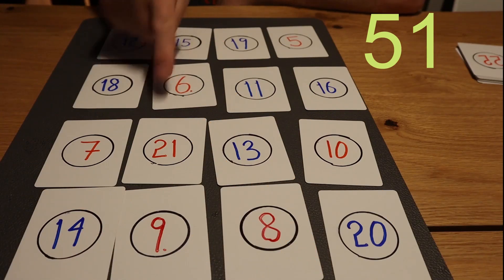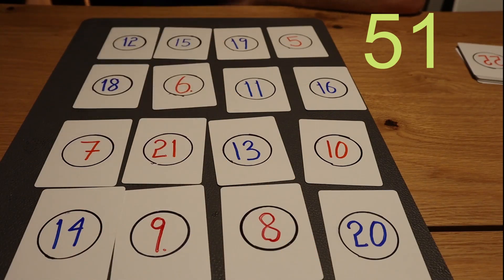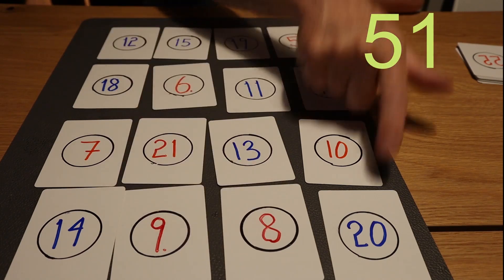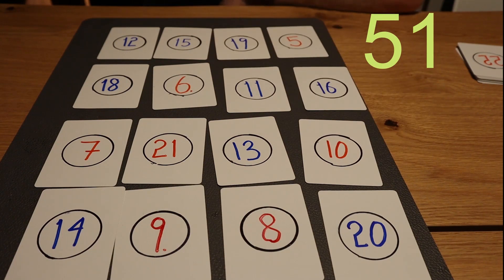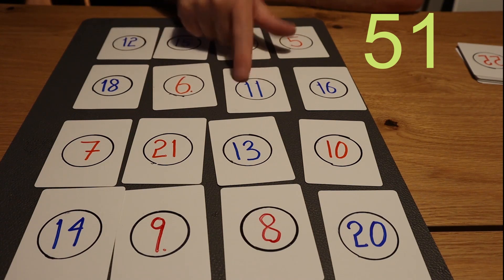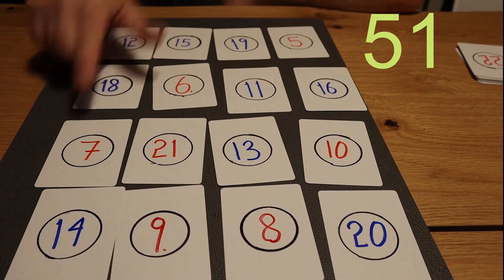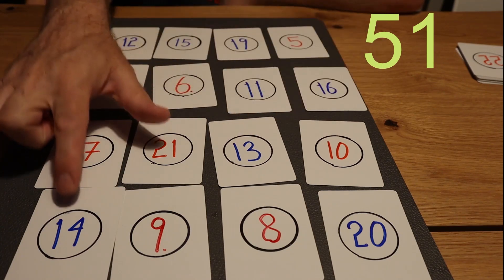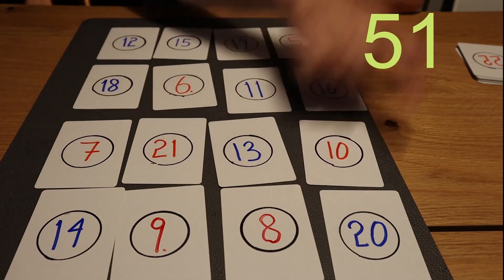And we have 19, 11 is 30 plus 13 is 43 and 8 is 51. 5 and 16 is 21 plus 10, that is 31 plus 20 is also 51. If we take it this way here, 12, 27, 37, 46 and 51. 18, 24, 25, 35 and 60 more is 51. 7, 28, 38, 41 and 51. 14 and 9, 8 and 20 is also 51.